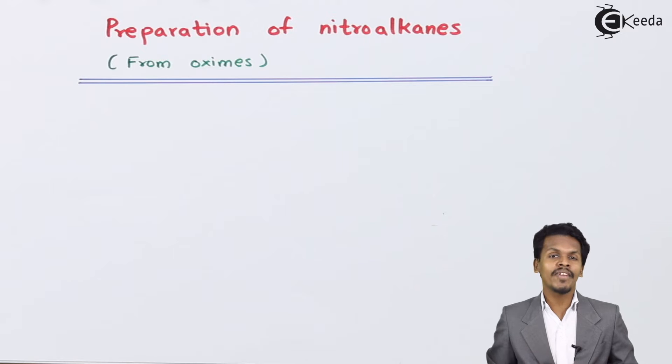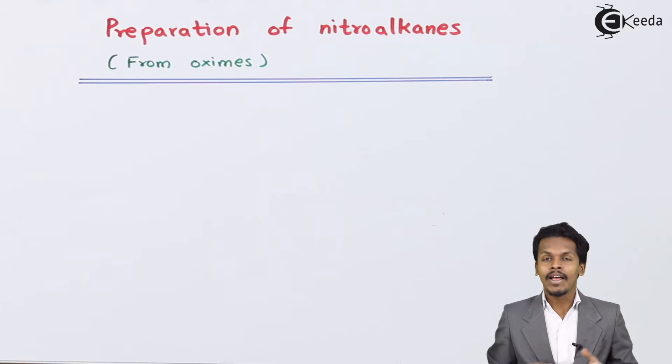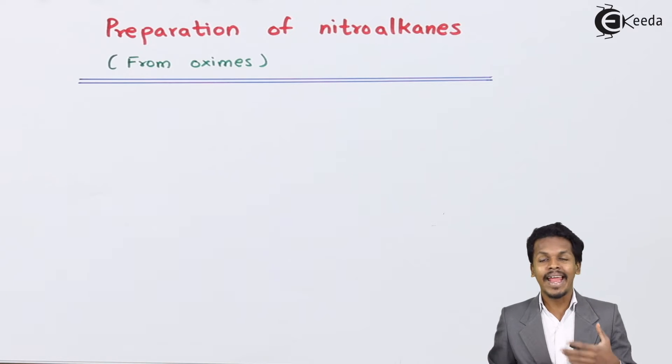So friends, in this topic we are going to convert an oxime into a nitroalkane. Oximes are basically divided into two types: aldoxime and ketoxime.